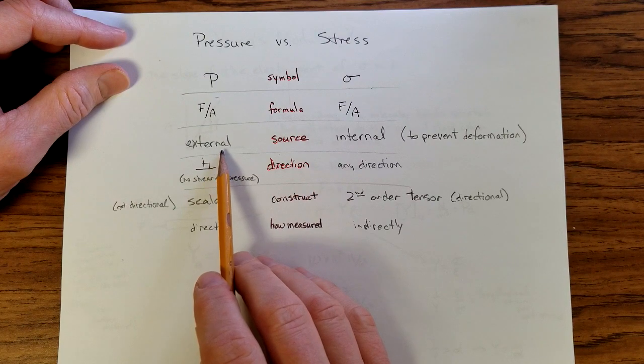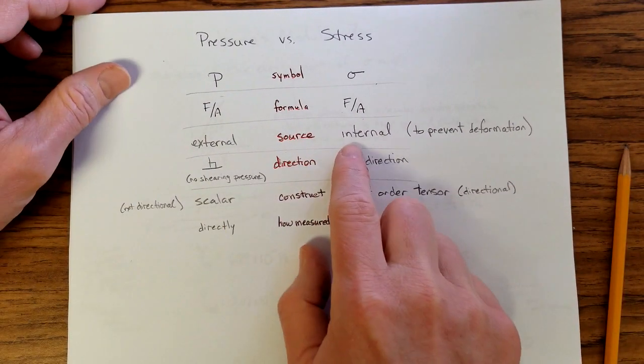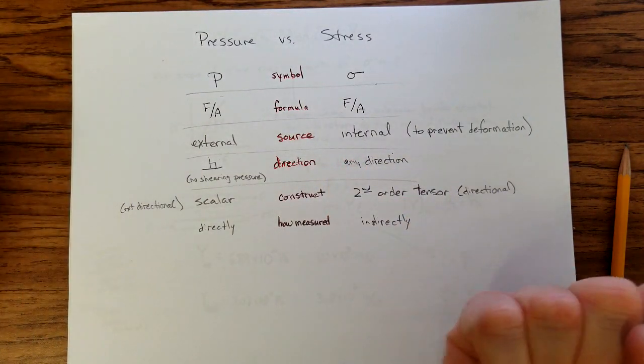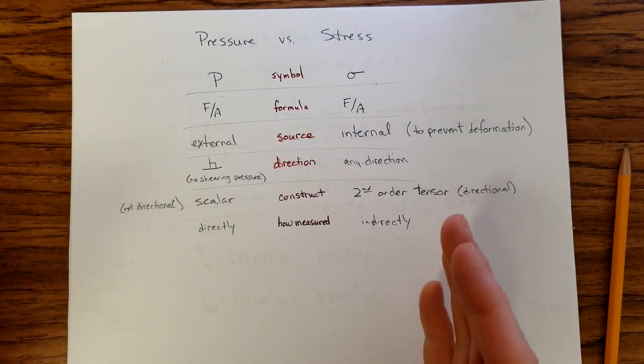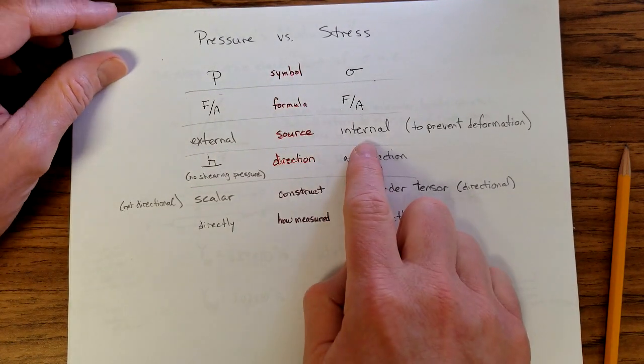Pressure is an external thing. Forces are being applied from the outside, whereas stress technically is an internal thing. We talk about it in terms of, I apply a force to a rod, but it really is the forces that the rod applies in order to not be deformed. So that technically is stress.